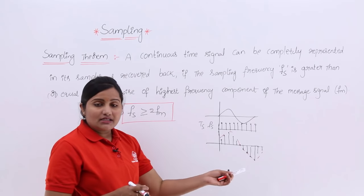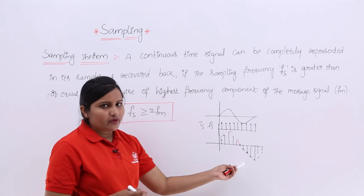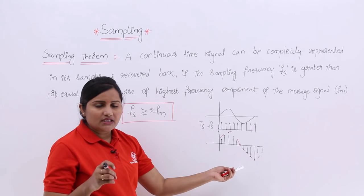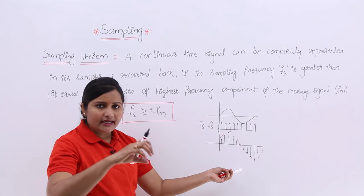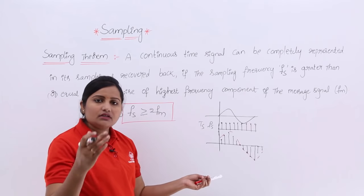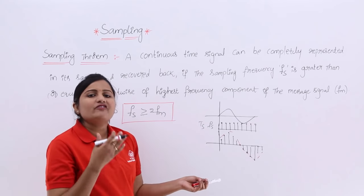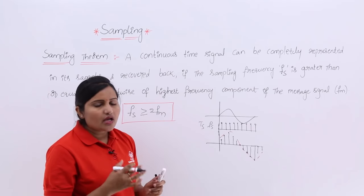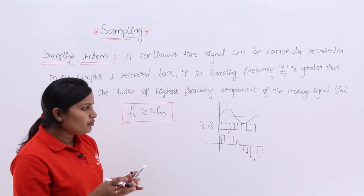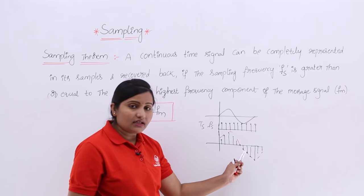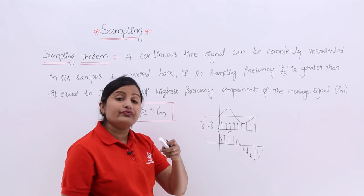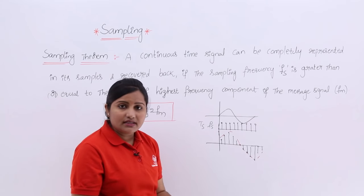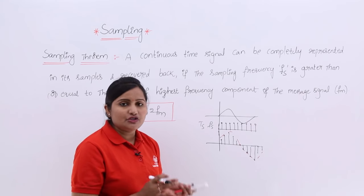You need to take the transform of this sampled signal. After getting the transform, you take its spectrum and then take the inverse transform — you will get your original signal back. I will show you in the next class how to get the spectrum of this signal and how to reconstruct the original message signal through derivation.